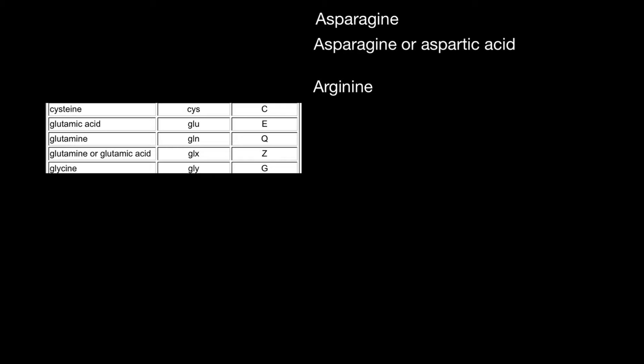We learned five amino acids, so let's take them in random order and try to recall the three-letter and one-letter abbreviation of each. So, asparagine — asparagine is the amide of aspartic acid. Aspartic acid has three-letter code ASP. And why does asparagine also not use ASP? The mnemonic hint is that two beats one — aspartic acid gets ASP, so asparagine uses different letters. One-letter code for aspartic acid is D.